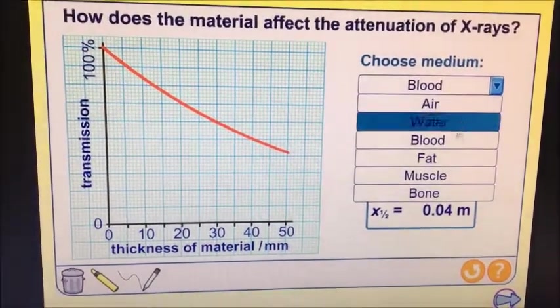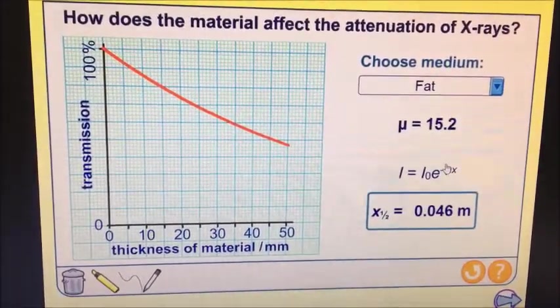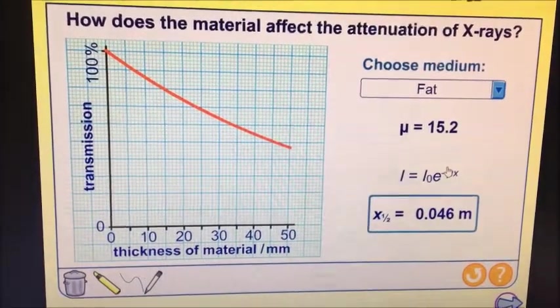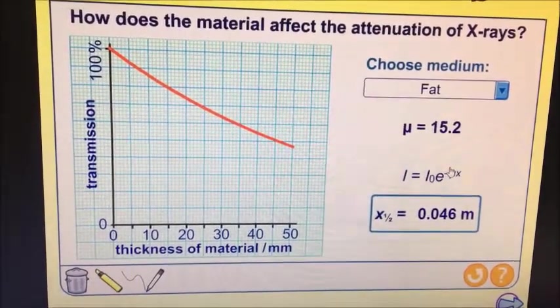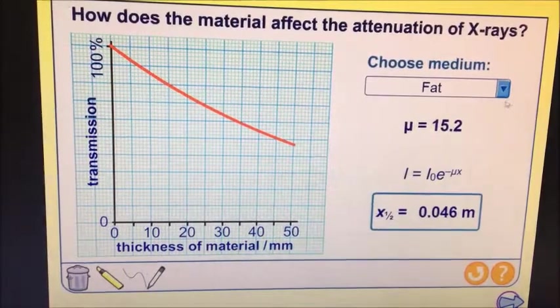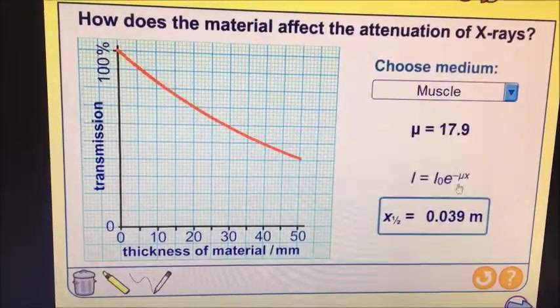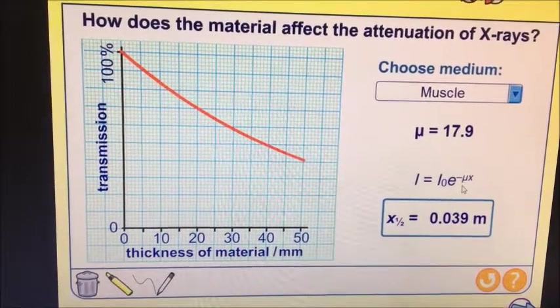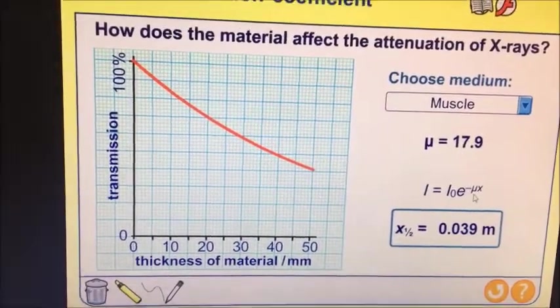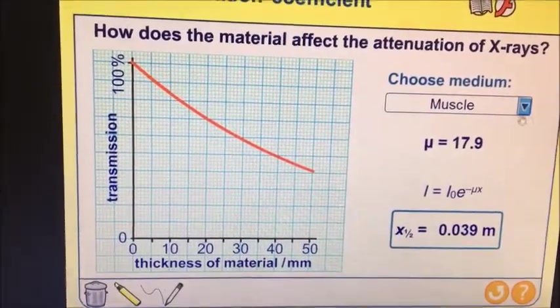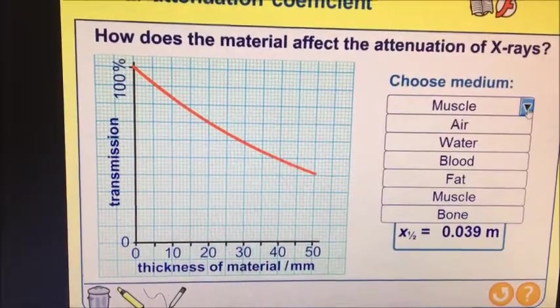And then we've got fat here. So there's a layer of fat, obviously, 0.046—just a little more than water and blood. And then we have muscle at 0.039, so just under 4 centimeters. So less dense than water may surprise you.